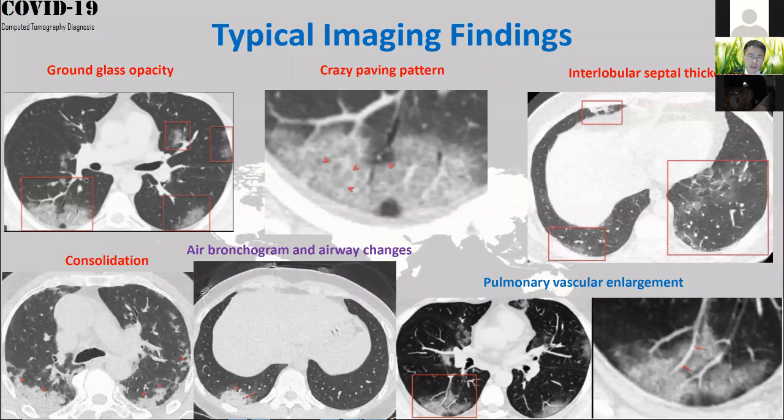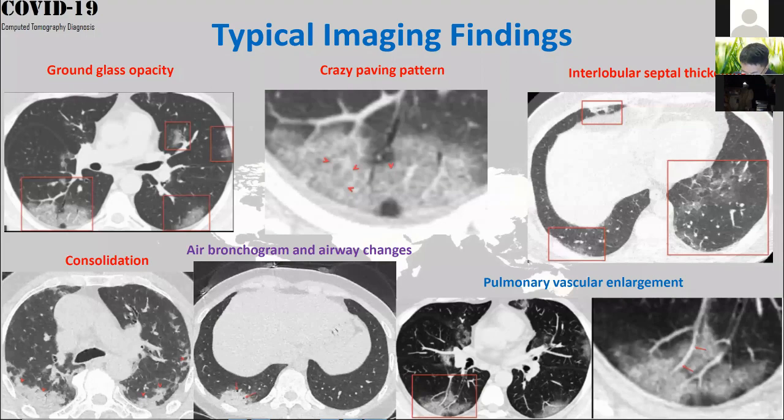Some typical findings in these images include ground glass opacity, which is the most commonly seen lesion in the lung, consolidation, and crazy paving patterns. There are different types of lesions particularly for COVID-19. Sometimes you can use these features to distinguish COVID-19 from other pneumonia, or even lung cancer.